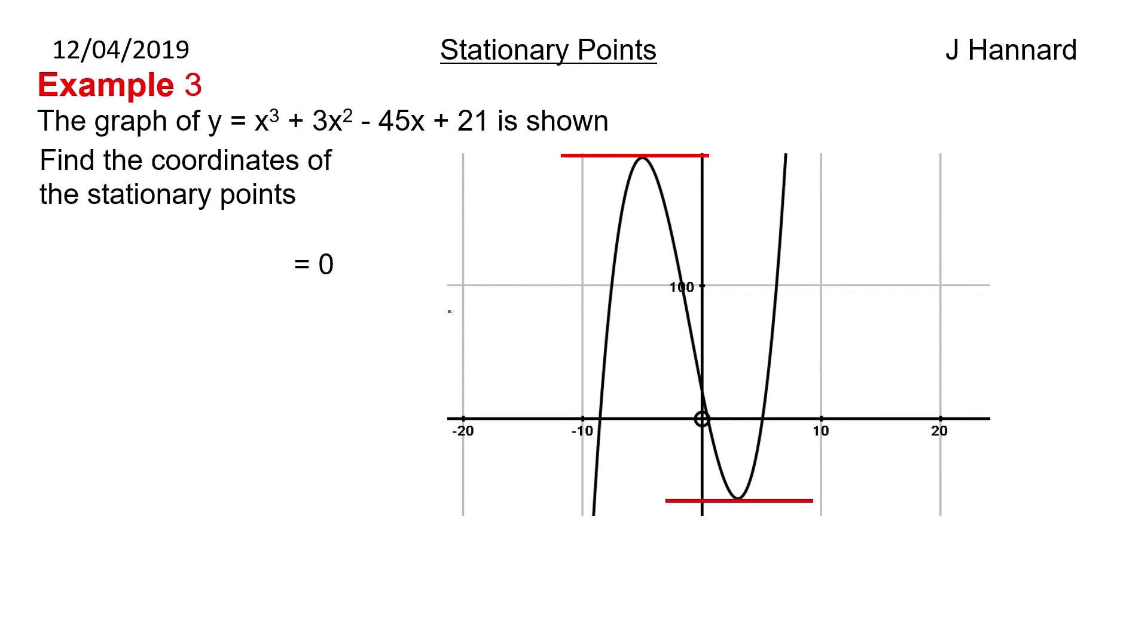So what do we know? Well we know the gradient of those two points is 0. So we differentiate first. So we get 3x squared plus 6x minus 45 and then we set it equal to 0 because we want 0 gradient. We then solve that. I've divided both sides by 3. You can do that. The other side is equal to 0, so just divide 0 by 3 and get 0. So we get that, which factorizes to x plus 5, x minus 3 equals 0.